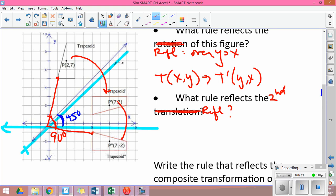And that was over y equals 0, or the x-axis. And that rule is T prime of (x,-y).